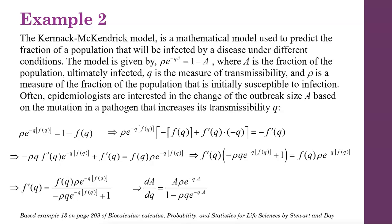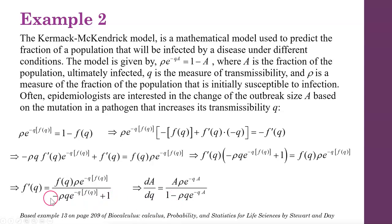The last step is to rewrite f(q) and f prime of q back in terms of the original variables. So dA/dq equals a times rho e to the negative q times a, divided by 1 minus rho q e to the negative qa.